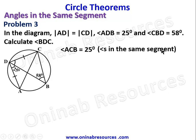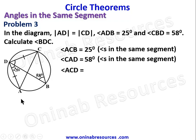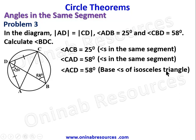We can also connect the angle with the common base CD. Angle CAD is equal to 58 degrees — angles in the same segment. Since AD equals CD, this is an isosceles triangle, which means angle ACD is equal to angle CAD, so angle ACD is equal to 58 degrees — base angles of an isosceles triangle.